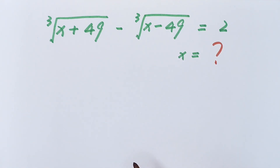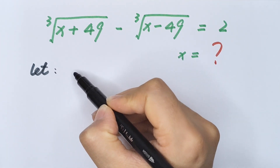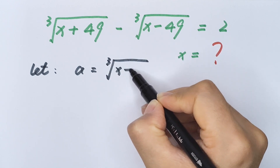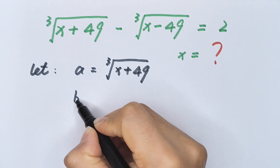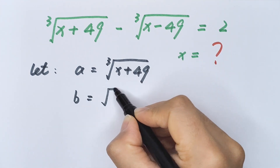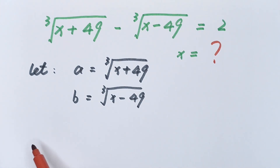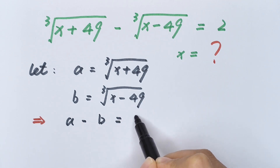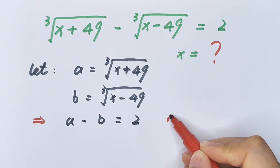To find the value of x, we let a = ∛(x + 49) and b = ∛(x − 49). Then our equation can be written as a minus b equals 2. We can label this equation 1.